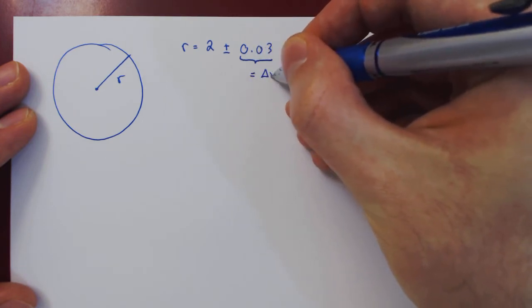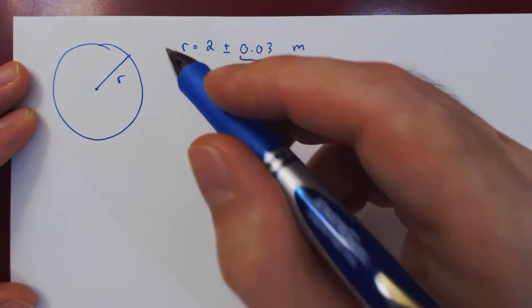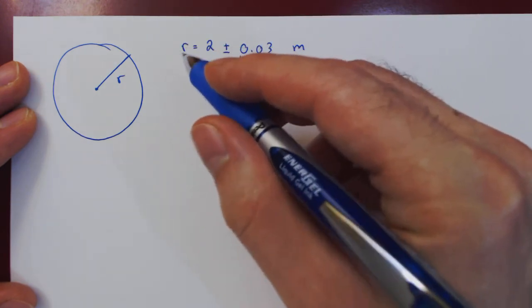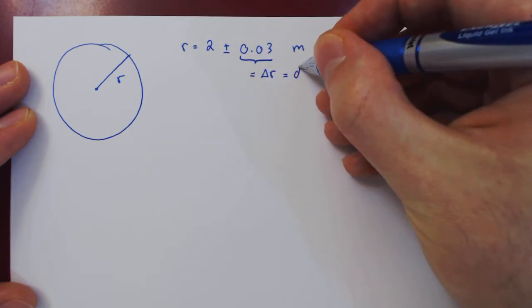this is delta r, a small change in the variable r. As r is our independent variable, delta r will be the same as dr.